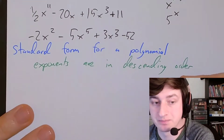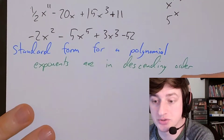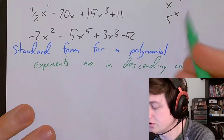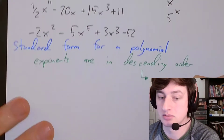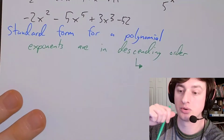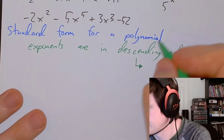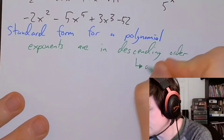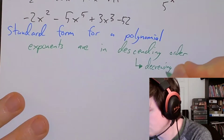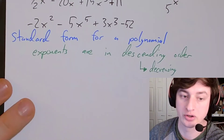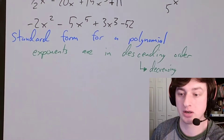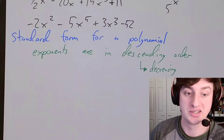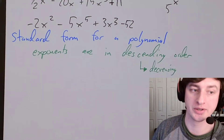Descending means decreasing. So if you descend down some stairs, you walk down. If you ascend, you go up. Descending means down — decreasing. If you were to descend a scale, you'd go high to low. I seriously thought about attempting to sing a scale — it's not happening. On a guitar, if you play an open note and fret up the string to get higher, that's ascending. Descending would be going down the fret, making everything lower and deeper.